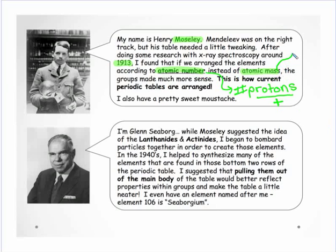The atomic mass is sort of the sum of protons plus neutrons — though there's a little nuance to that, so it's not quite a perfectly true statement. We'll come back to that by the time we're done.